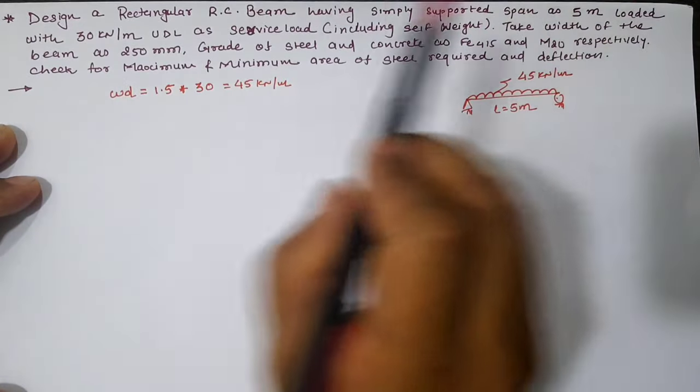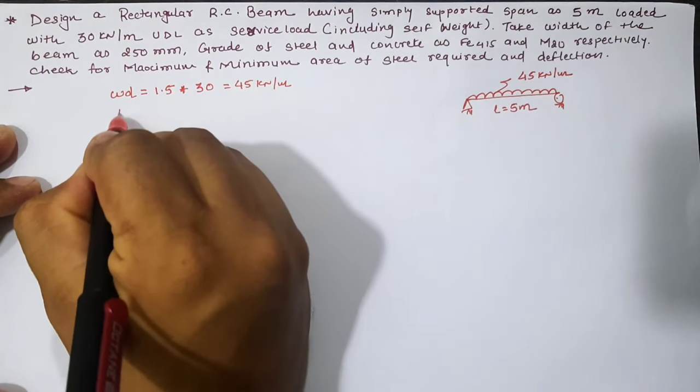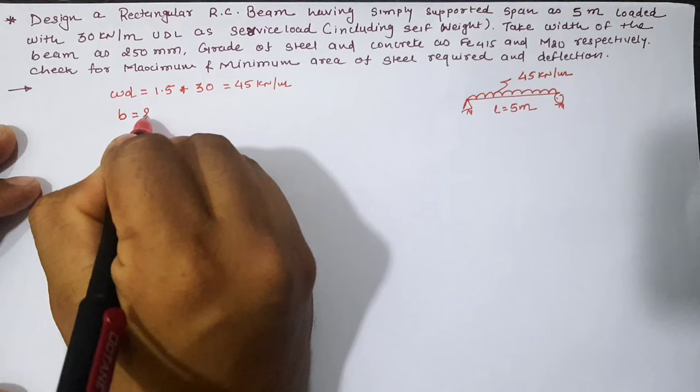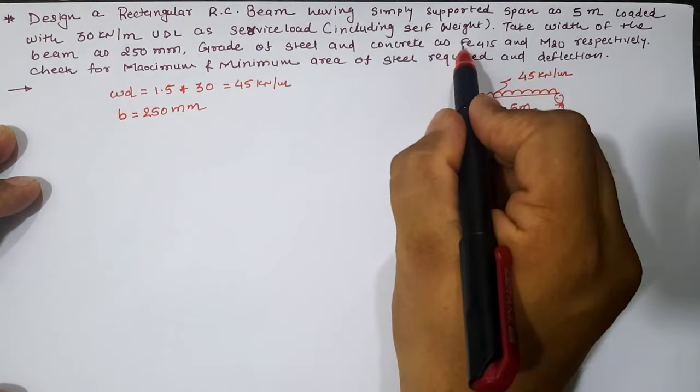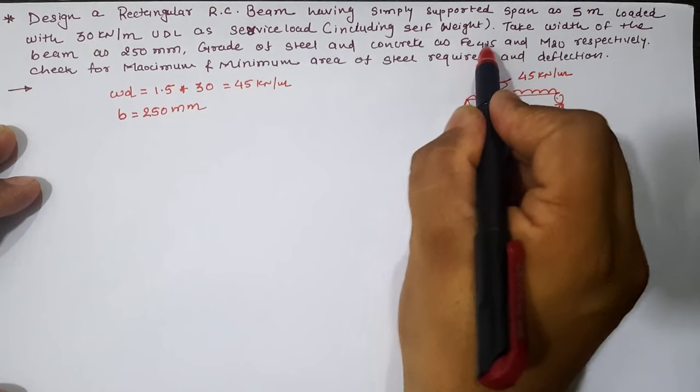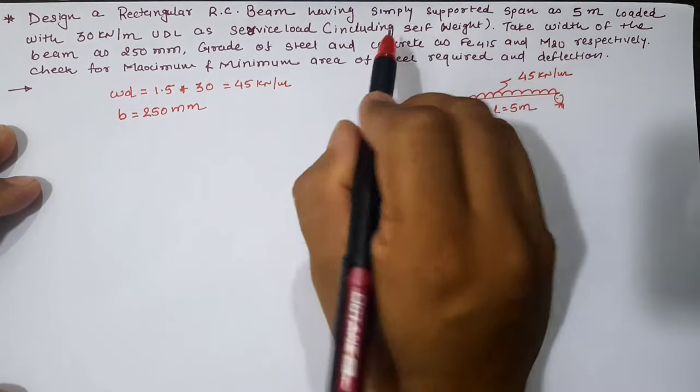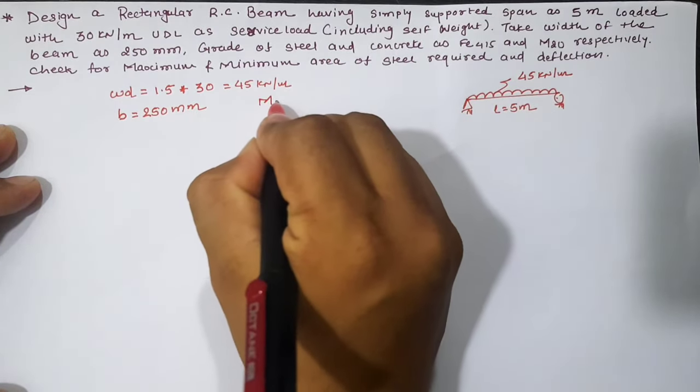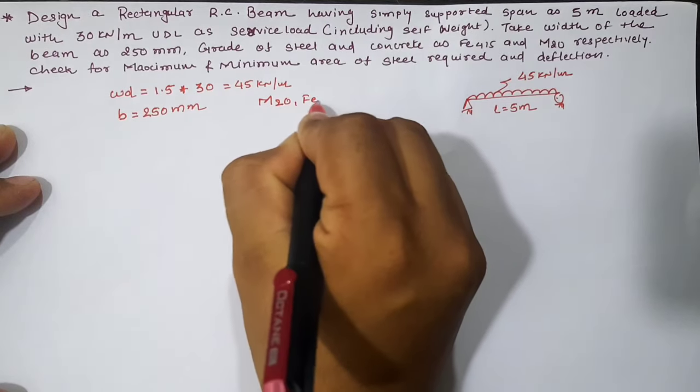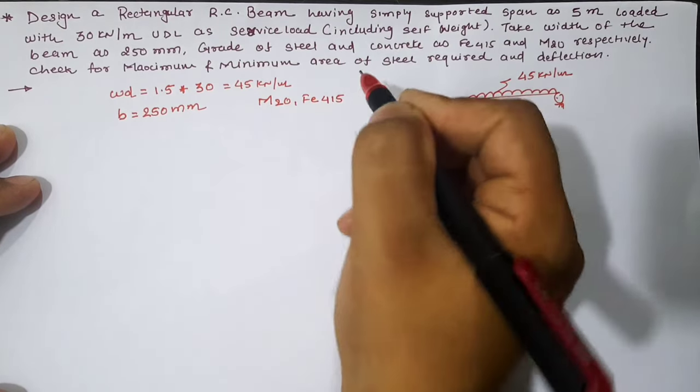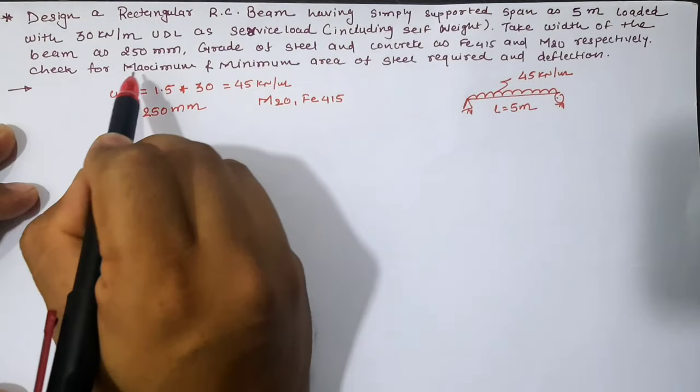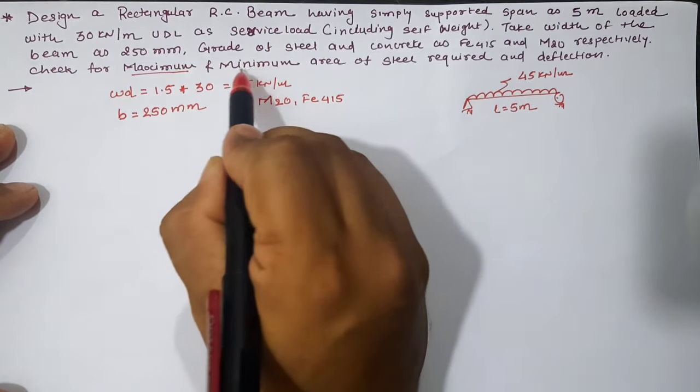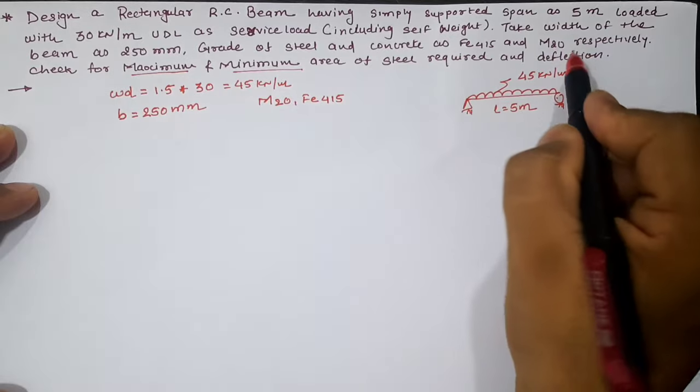We have given the width of the beam as 250 mm. Next point is Fe 415 grade of steel and M20 grade of concrete.